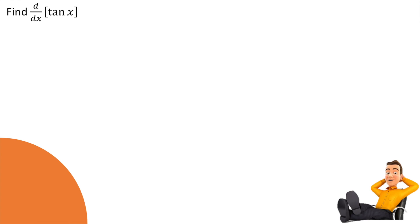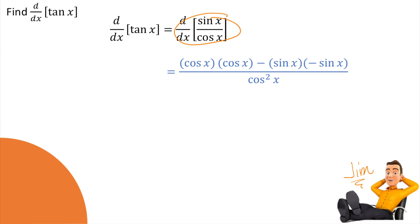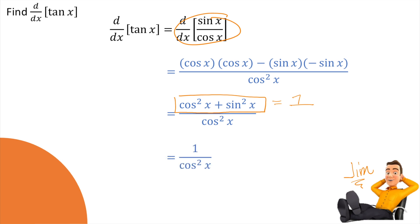In case you don't want to memorize the derivative of tangent x, you can derive it the long way. Tangent x is the same as sine over cosine, so we use the quotient rule: low d-high minus high d-low all over low-low. Cleaning that up gives cosine squared plus sine squared over cosine squared. Since cosine squared plus sine squared equals 1, this simplifies to 1 over cosine squared x, which is the same as secant squared x.